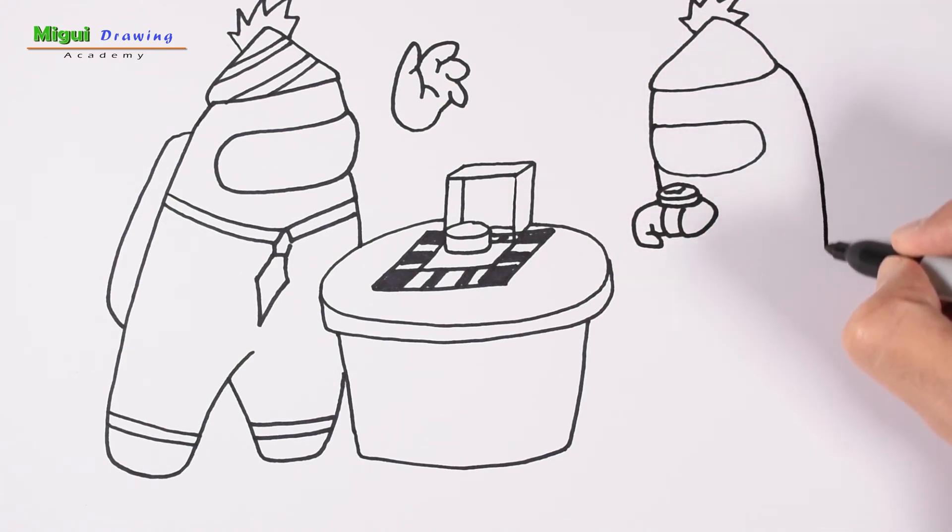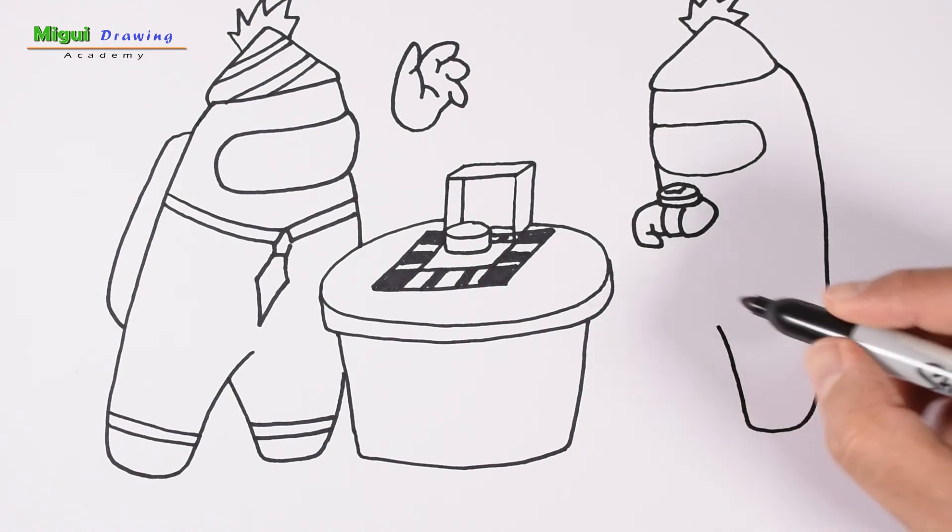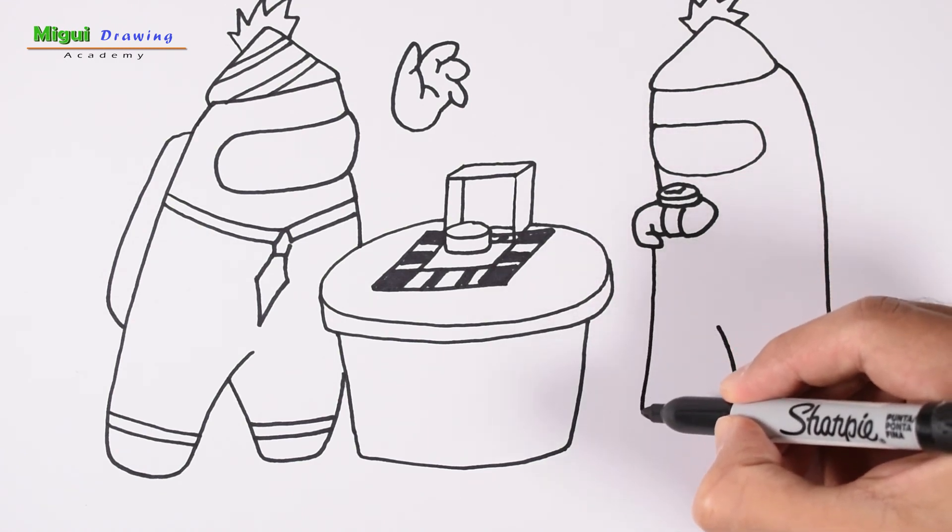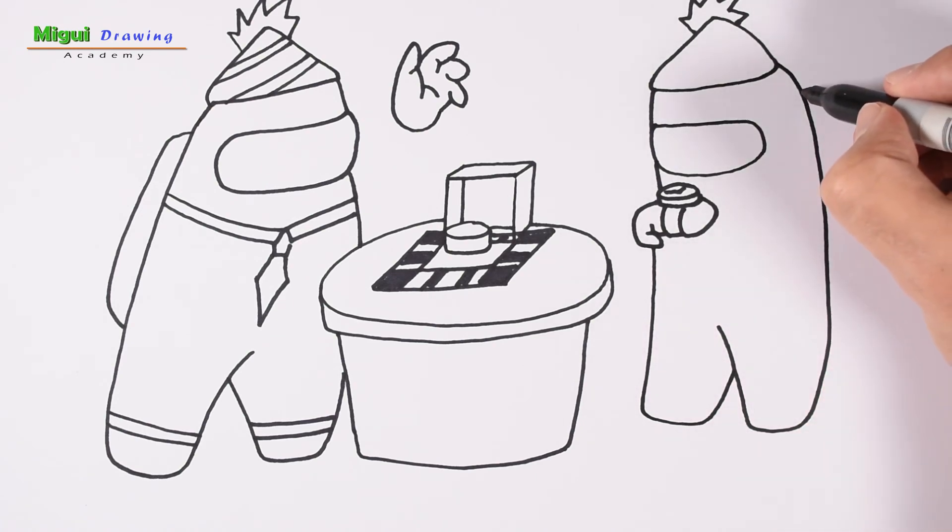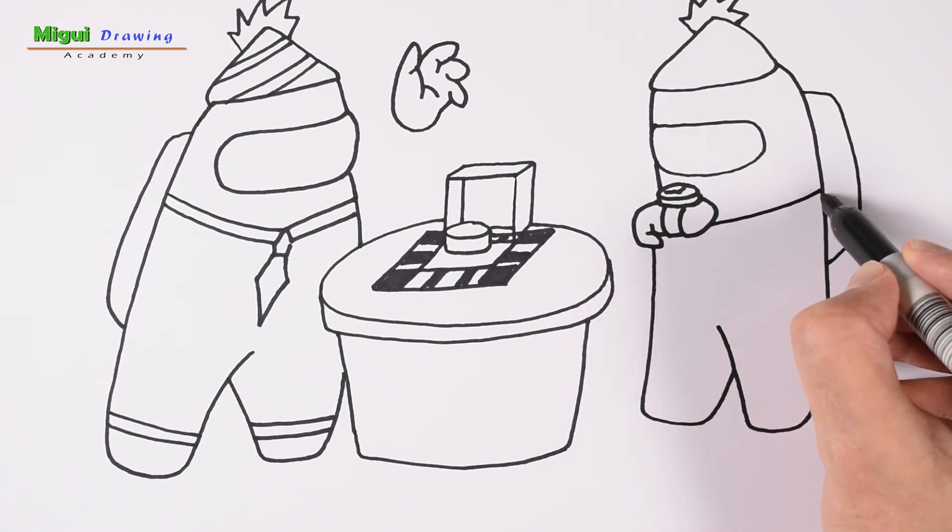For the top going down to one leg, and then from the hand let's do the other one. Do the backpack and also make the suit for this crewmate.